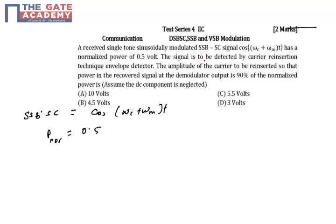The signal is to be detected by the carrier reinsertion technique using an envelope detector. The amplitude of the carrier to be reinserted is such that power in the recovered signal at the demodulated output is 90% of the normalized power. Assume DC component to be neglected. We have to find the amplitude to be reinserted.